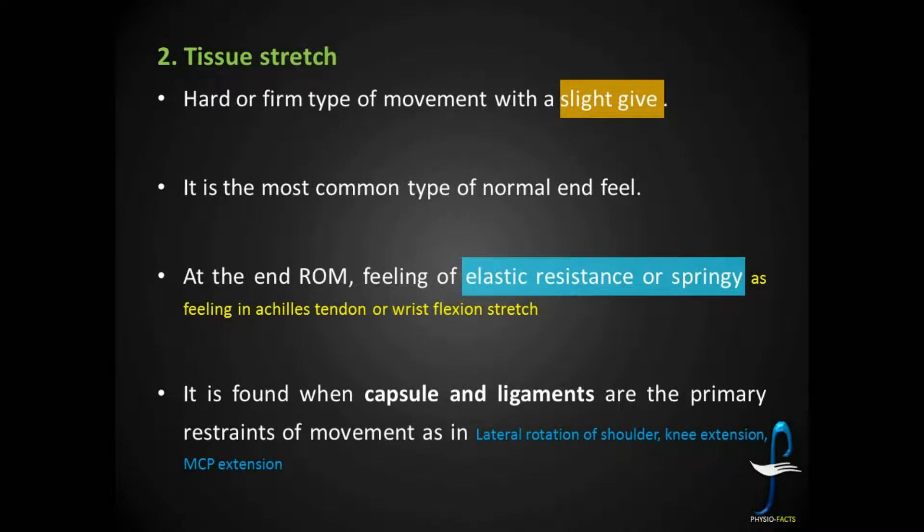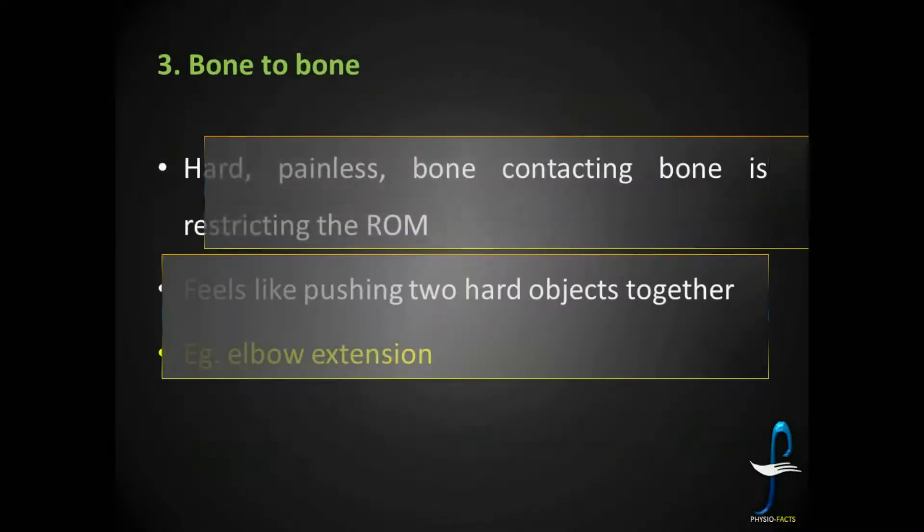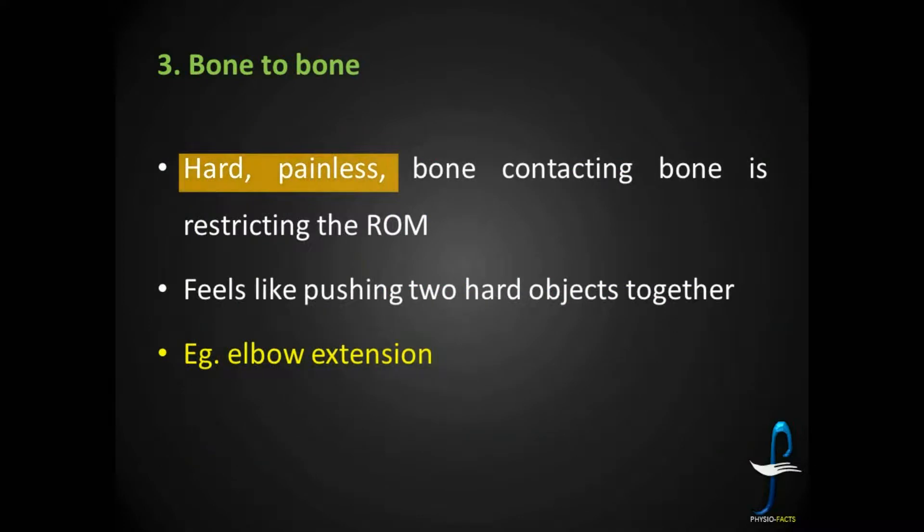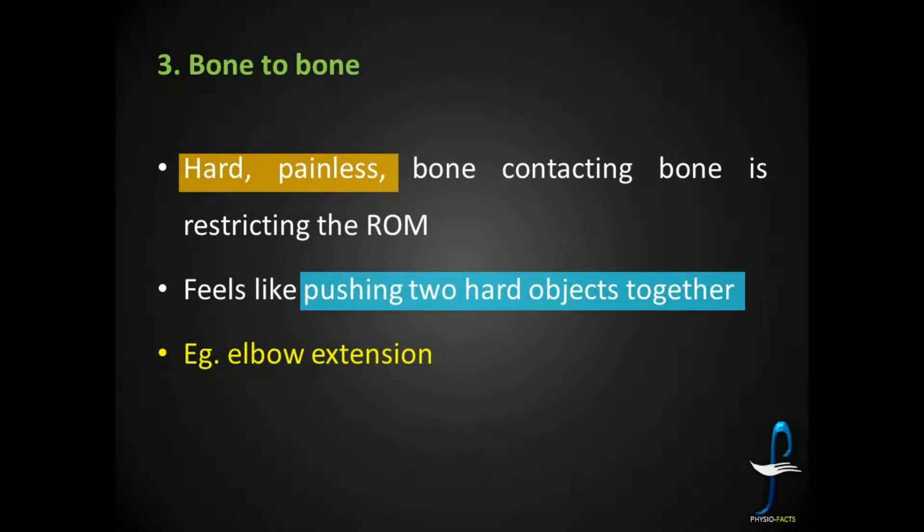The last one is bone to bone. Here the feel you get at the end range of motion is hard and painless because the bone is contacting another bone, which is restricting the range of motion. It feels like pushing two hard objects together. Example: elbow extension.